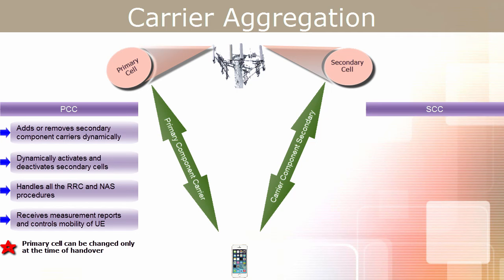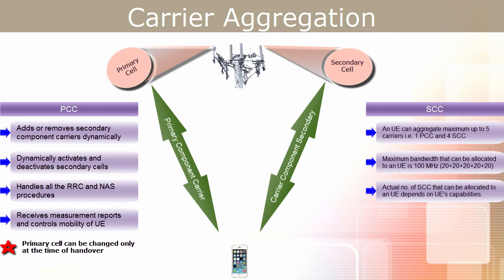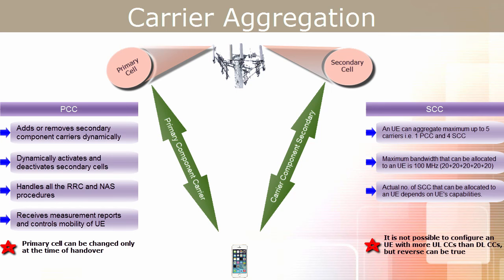A few important points about secondary component carriers: as per the latest specifications, a UE can aggregate a maximum of up to five carriers — that is, one primary component carrier and four secondary component carriers. So the maximum bandwidth that can be allocated to a UE is 100 MHz. The actual number of secondary component carriers depends on the UE's capability. It is not possible to configure a UE with more uplink component carriers than downlink component carriers, but the reverse can be true.